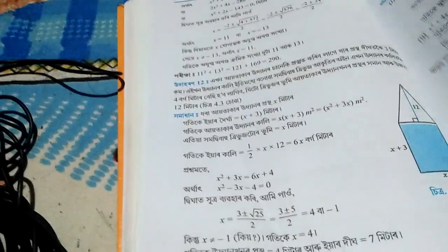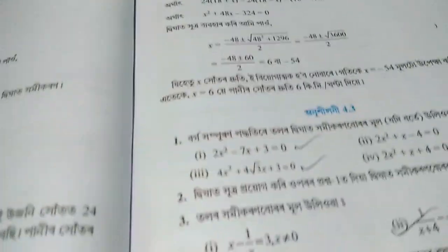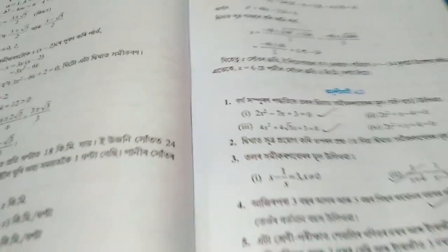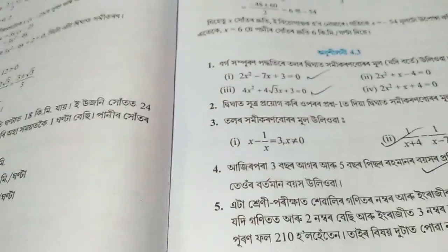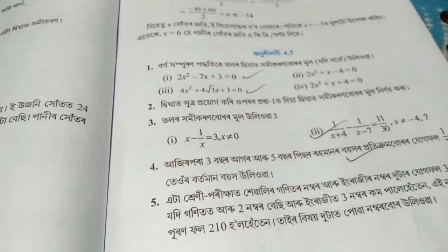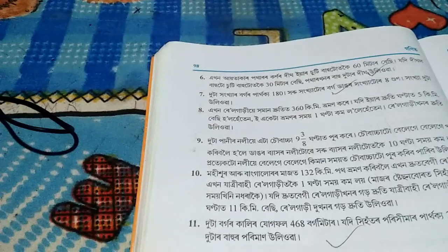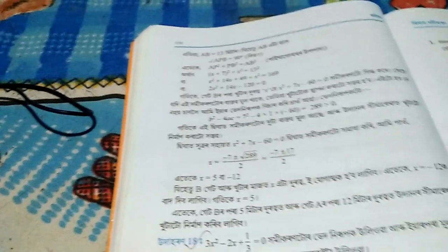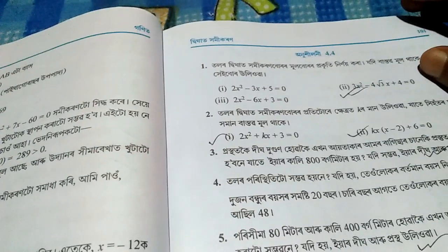Topic 4.3 is also very important. The page number is 98. Question numbers 1, 3, and 5 are important here. Then on page 100, I've marked the important question numbers - specifically question 18 is very important for this section.